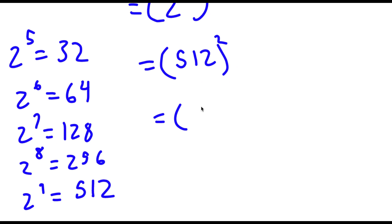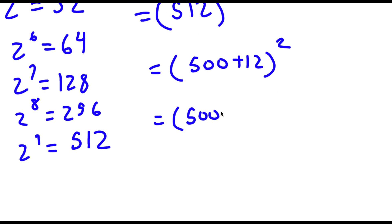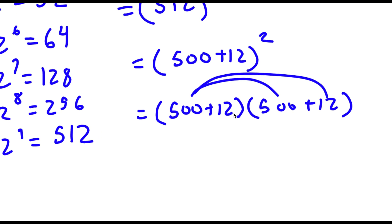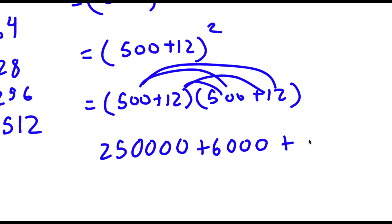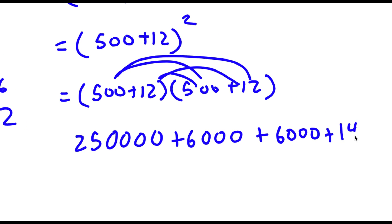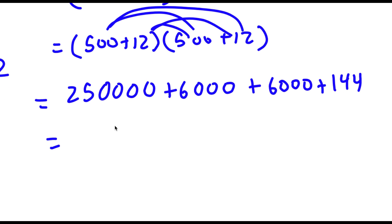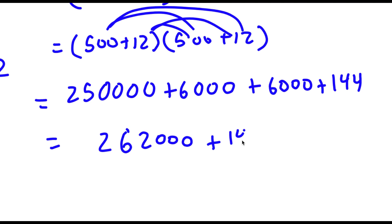So now to solve this, I'm going to rewrite 512 as 500 plus 12, squared. So now I have 500 plus 12 times 500 plus 12. I'm first going to distribute 500: 500 times 500 is 250,000, plus 500 times 12 which is 6,000. Now I have plus 12 times 500, which is 6,000 again, plus 12 times 12, which is 144. So I have 250,000 plus 6,000 plus 6,000, which is 12,000, so 262,000 plus 144, which is equal to 262,144. So this is my answer.